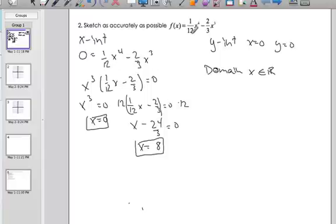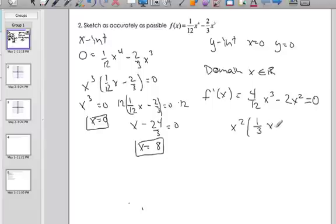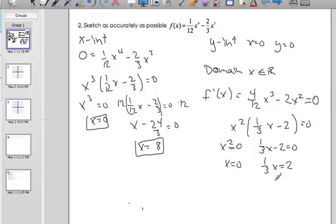Now some of the things we can look at is we can look at our minimums and maximums. To find minimums and maximums, I'm going to take the first derivative. When I take the first derivative, I get 4/12 x cubed minus 2x squared, and they could potentially happen at zero. So I factor out an x squared, and the 4/12 is the same as one-third. So here I can say x squared could be 0, which means x is 0, or one-third x minus 2 is 0. So x equals 6. Now these are potential maximums and minimums.